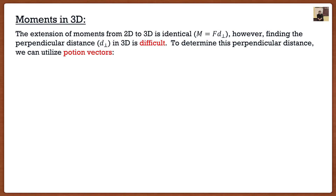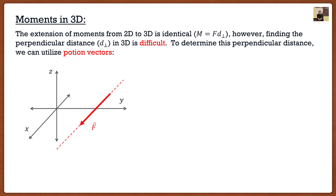So what we're going to actually have to do is use position vectors. Let's say I have a nice three-dimensional space and I have my force vector F. Moments are specific about points — depending on where you take the moment, it's going to be different. So let's say in this particular case I want to take the moment about point O. To get this moment, I basically have to find the perpendicular distance between my force vector and that point. The question really becomes: how do we find that distance?